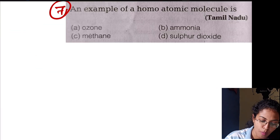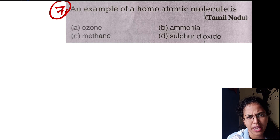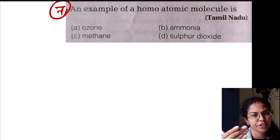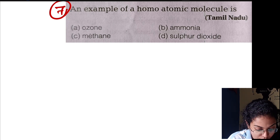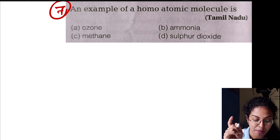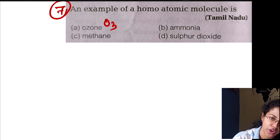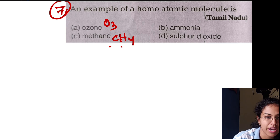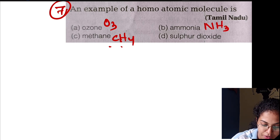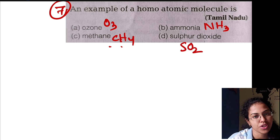An example of a homo-atomic molecule. Homo means same type of atoms. Hetero means different types. So a homo-atomic molecule has all the same atoms. Examples: Ozone (O3), Oxygen (O2), Nitrogen (N2) — these are homo-atomic. CH4 (methane) and NH3 (ammonia) are not, as they contain different atoms.